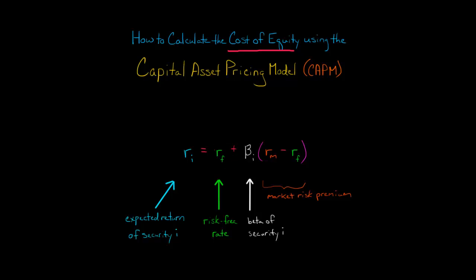That is going to give us the expected return of that stock, which is also the cost of equity. So this right here, the expected return and the cost of equity, they're actually the same thing. This is the rate of return that an investor in that stock, so this i, let's say that it's Walmart. So there's an investor in Walmart, and they're expecting to earn a certain return. They're expecting to earn a certain rate of return given the risk, the systematic risk of the stock of Walmart.